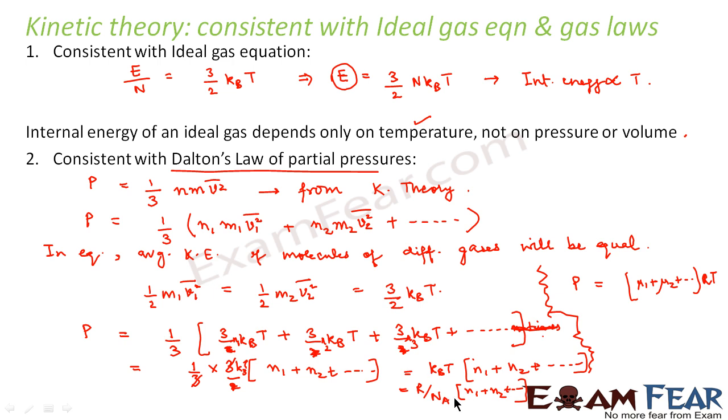So this is nothing but P₁ + P₂ + and so on. That is Dalton's law of partial pressure. That is, the total pressure is equal to the sum of the partial pressures of all the gases.